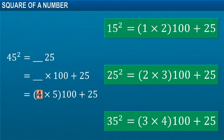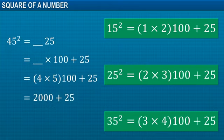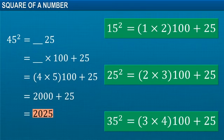Here, this number is 4, so we're multiplying it with the next whole number, that is, 5. Thus, the square of 45 is equal to 2025.